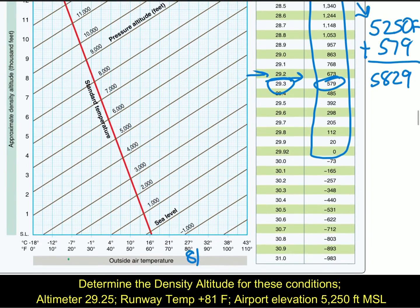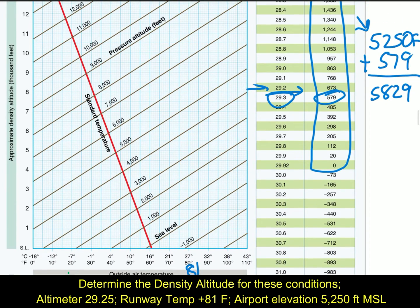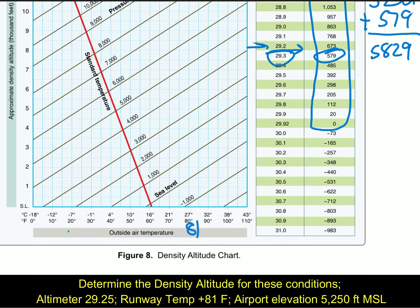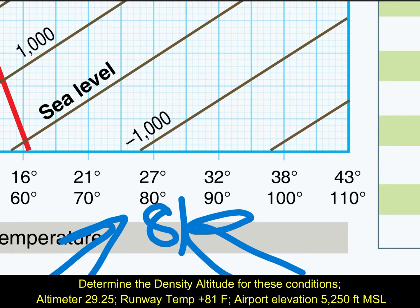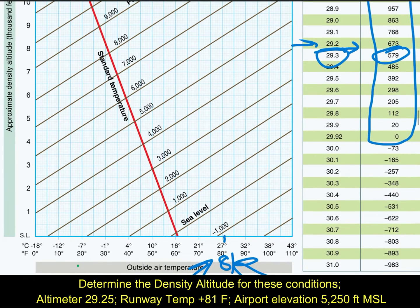So 5829 is the pressure altitude we'll use in the next part. We look at the density altitude chart — the outside air temperature is 81 degrees. The Fahrenheit scale on the bottom goes up by 10: 60, 70, 80 — so 81 is right here. We're going to take this point and go straight up.